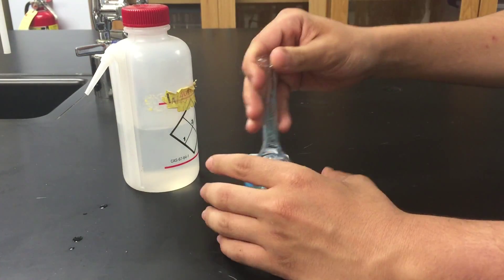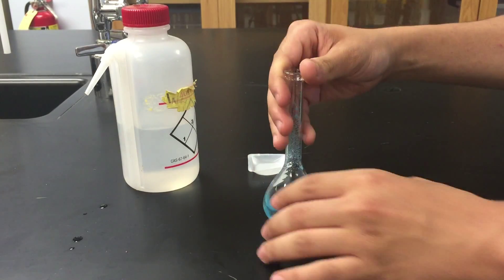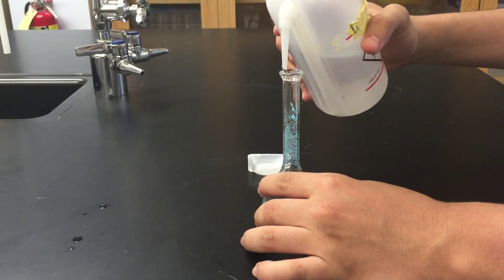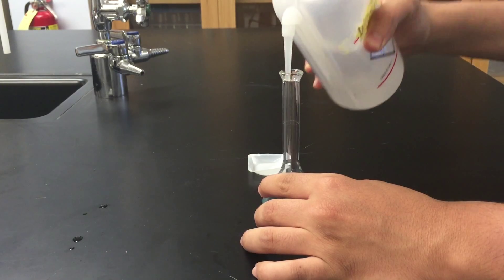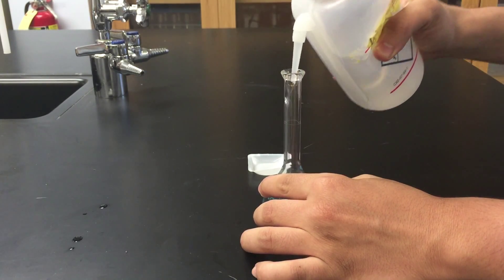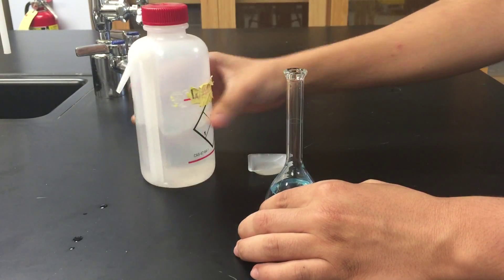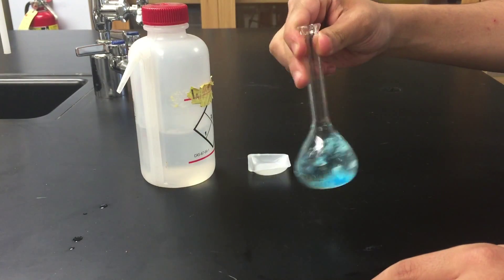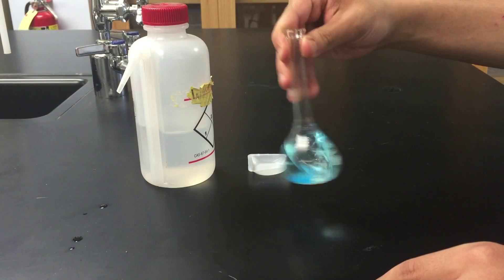Make sure to swirl the flask to dissolve all of the solid substance, and also rinse the sides of the flask with DI water. Swirl constantly until all of the solid is dissolved.